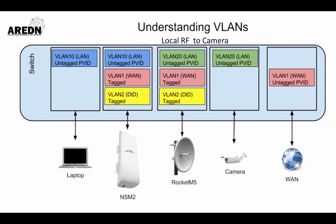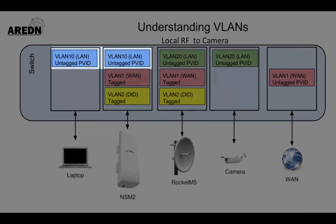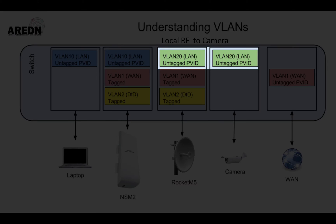We will start by looking at our switch configuration. Port 1 is on the left and moves to port 5 on the right. Ports 1 and 2 are defined as VLAN 10. Port 1 is the local LAN port for the Nanostation M2 attached to port number 2. Any device plugged into port 1 will receive an IP address from the Nanostation M2. Likewise, ports 3 and 4 are defined as VLAN 20.